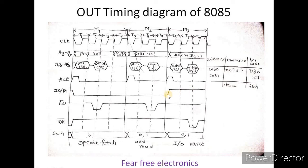This is IO write operation. The IO/M bar signal is high, indicating IO operation. S0 and S1 status signals are 1,0, which indicates IO write. The address and data are available during the write cycle.